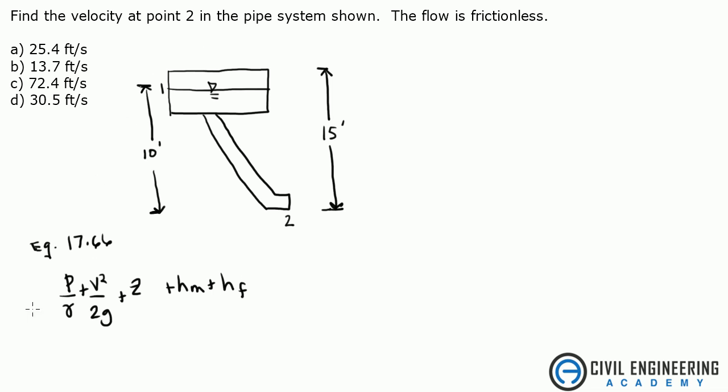This gives you the total energy in the system, energy total. So what we're going to do is set the energy at point 1 equal to the energy at point 2.